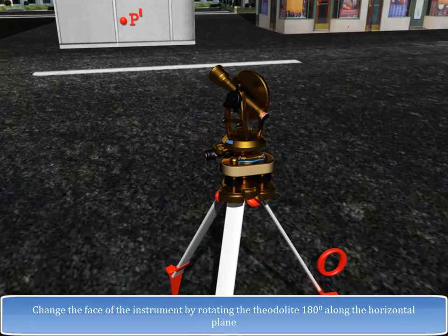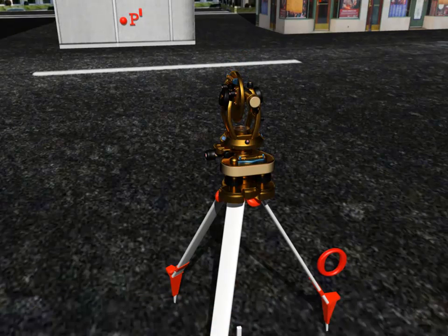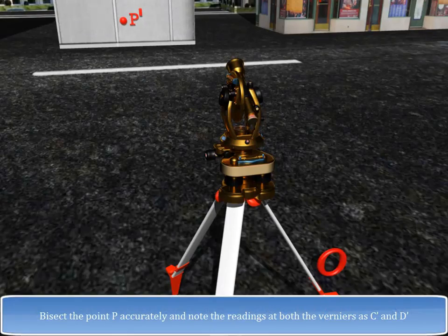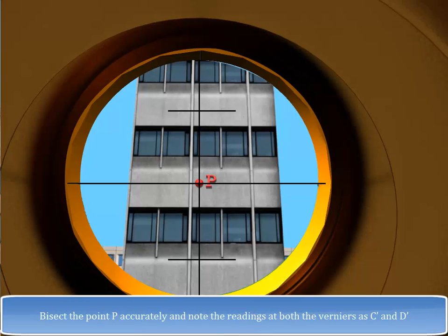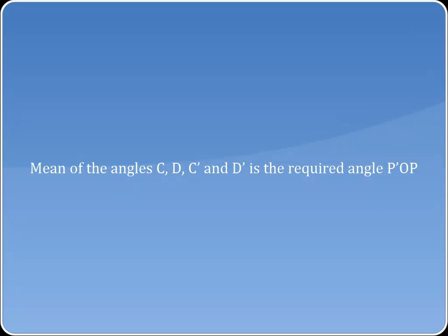Mean of the angles C and D. Change the face of the instrument by rotating the theodolite 180 degrees along the horizontal plane. Bisect the point P accurately and note the readings at both the verniers as C' and D'. Mean of the angles C, D, C' and D' is the required angle P'OP.